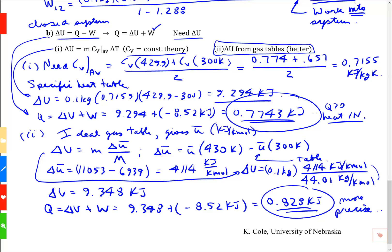The gas tables are a little better. The rule of thumb is, for delta t greater than 100 or so, use the ideal gas tables rather than the constant specific heat approximation.